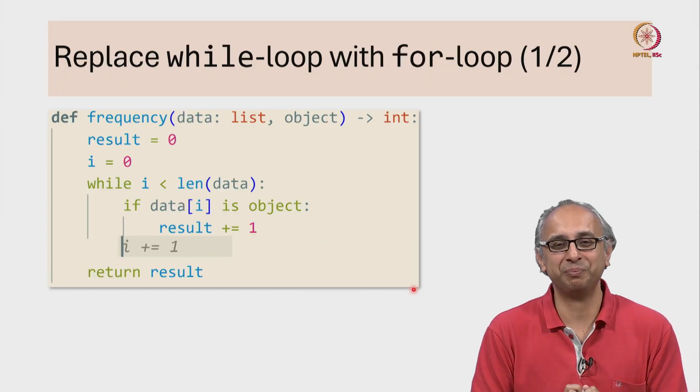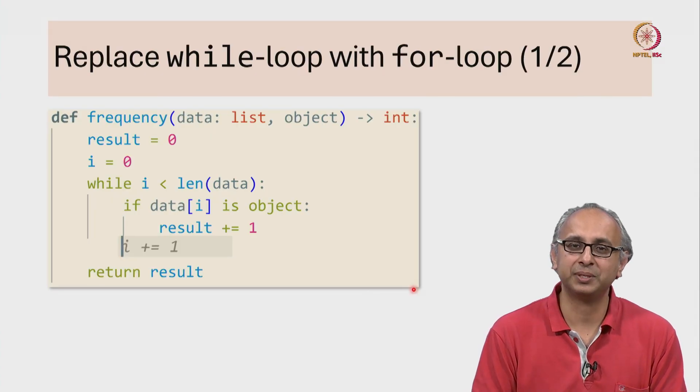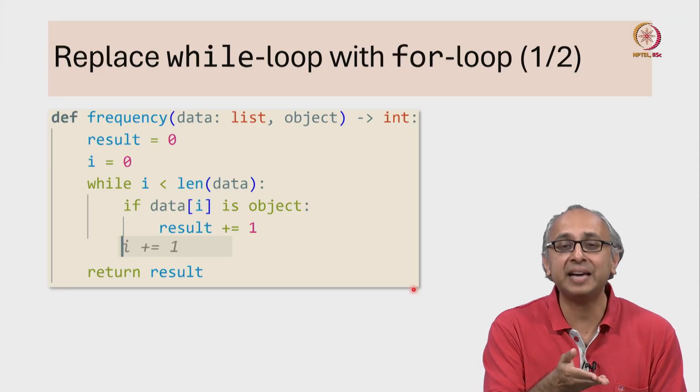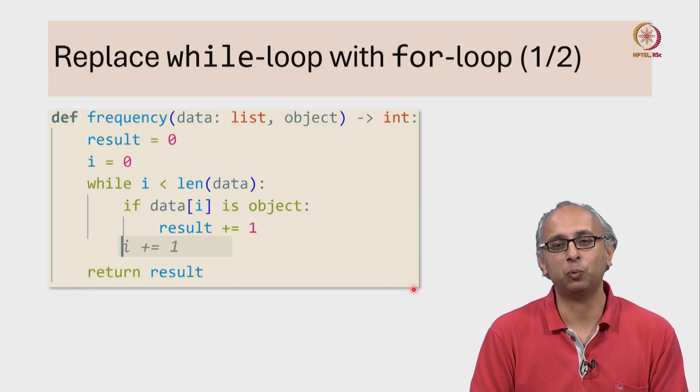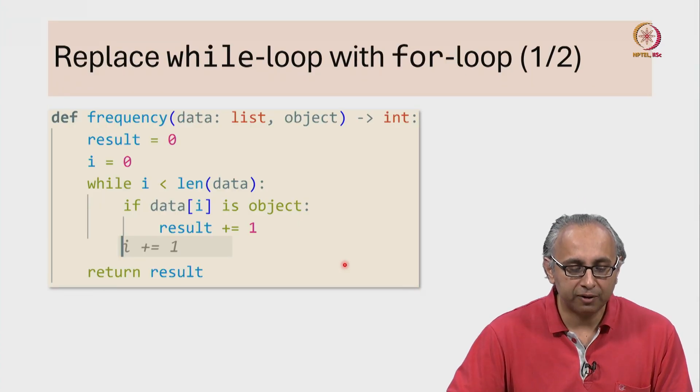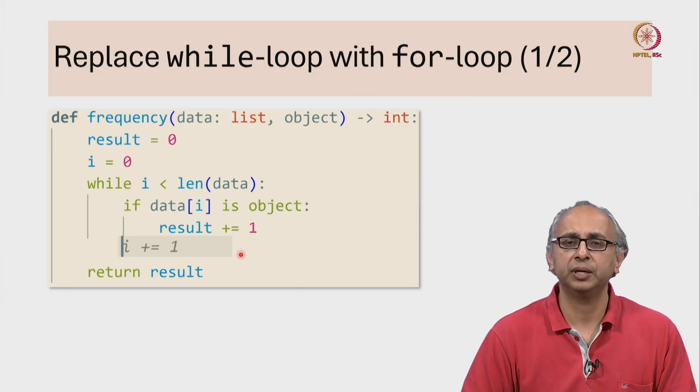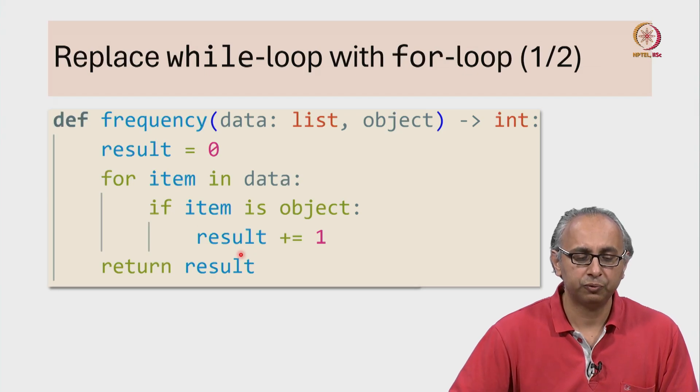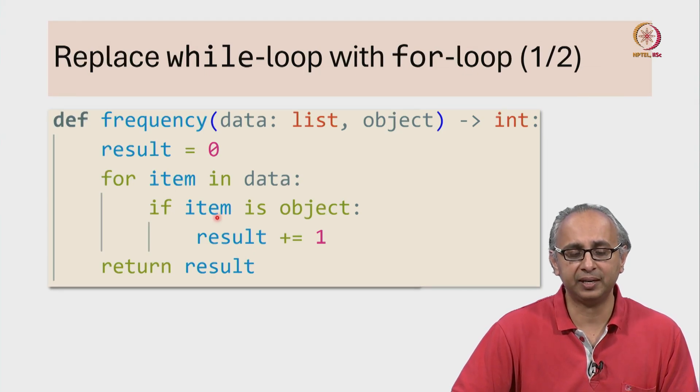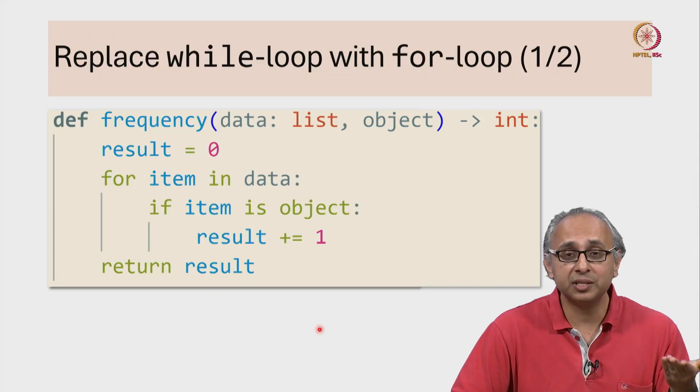So do you see how tricky it can be to write a while loop correctly? I have been programming for quite some time and I often find myself accidentally writing infinite while loops. So it's much better to try and write a for loop if you can. You don't have to manually control the iteration of your loop. We know how to write this code using a for loop. It's quite simple. For example, for each item in data, if that item is the object, increase the result by 1. This will produce the correct code. It's much easier to read, it's much easier to reason about, and it's far more likely to be correct.